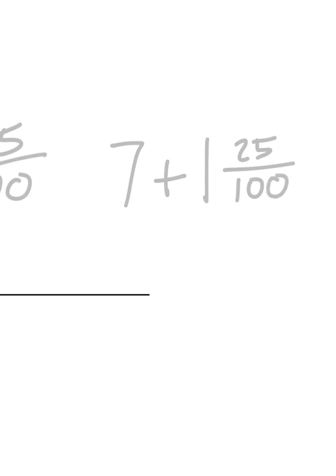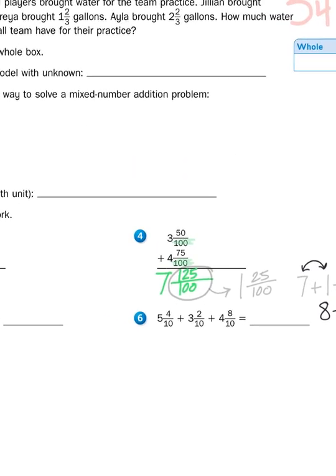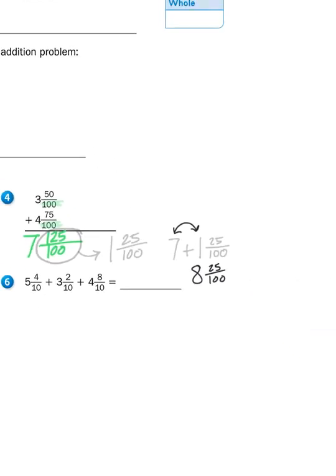And again, to make that an easier amount to kind of mentally digest, I just have to add the whole number of parts. What's 7 plus 1, everyone? Of course, that would be 8. So my total is 8 and 25 hundredths, which is how I get that answer. So again, I added the fractional parts first. There was some regrouping to do, so I had to do some regrouping. And then I added my whole number amounts together, and that gave me my answer.